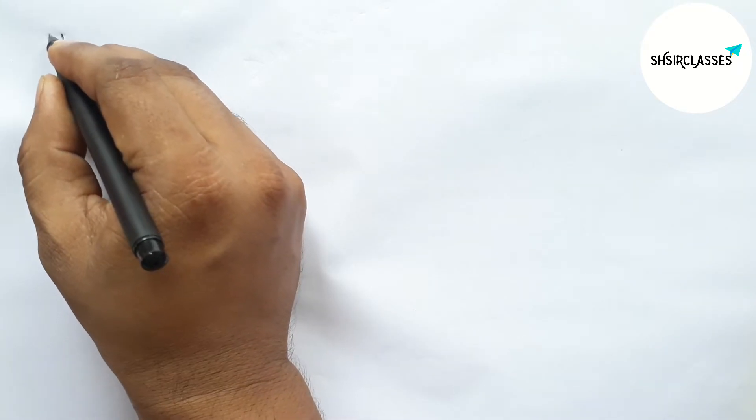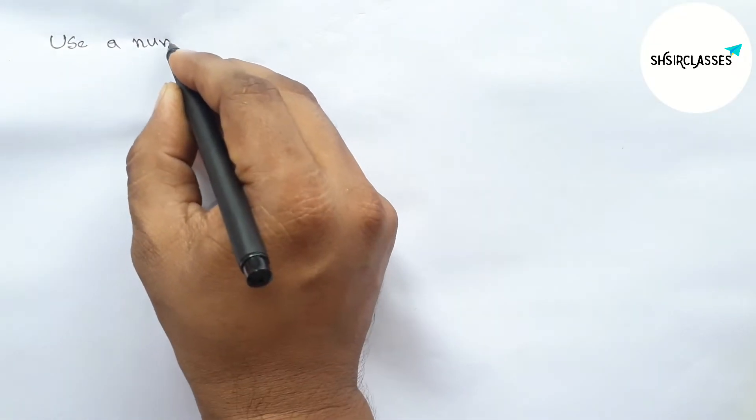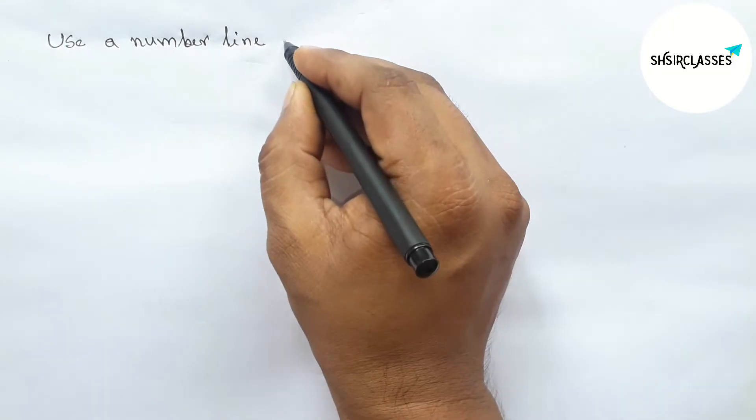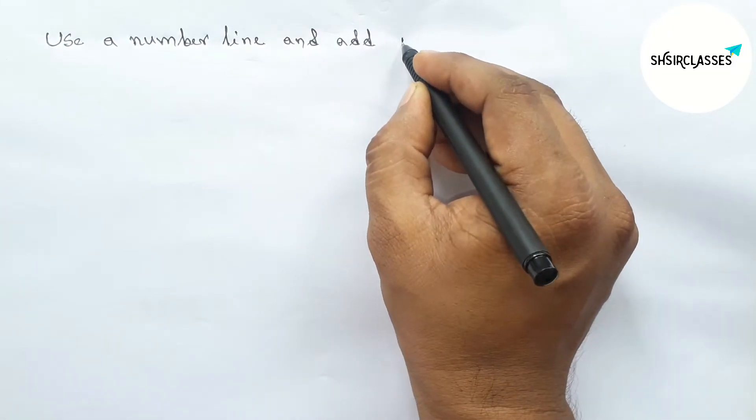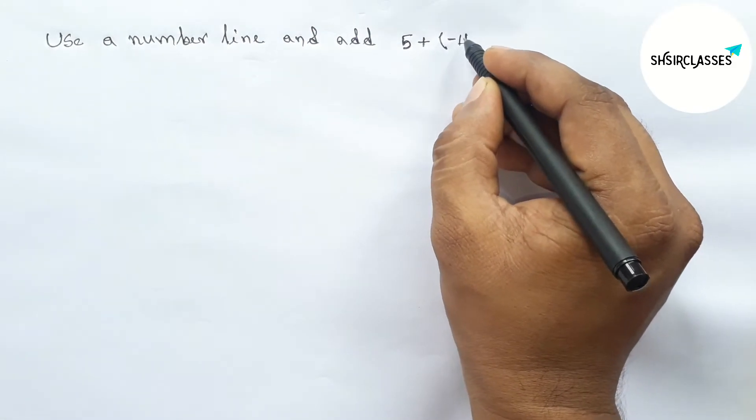Hi everyone, welcome to SI Share Classes. Today in this video, use a number line and add 5 plus minus 11 in first bracket in easy way. So please watch the video till the end. So let's start the video.